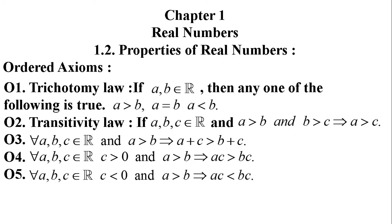Now the order axioms. If we consider two real numbers a and b, then either a is greater than b, a equals b, or a is less than b. This is known as the trichotomy law. The transitivity law states: if a, b, c belong to R and a > b and b > c, then a > c. Also, if a > b then a + c > b + c, meaning if we add any number to both sides of an inequality, the direction of the inequality does not change.